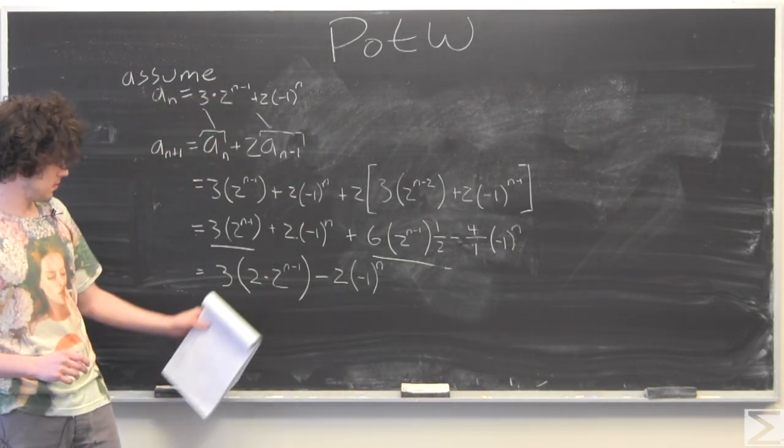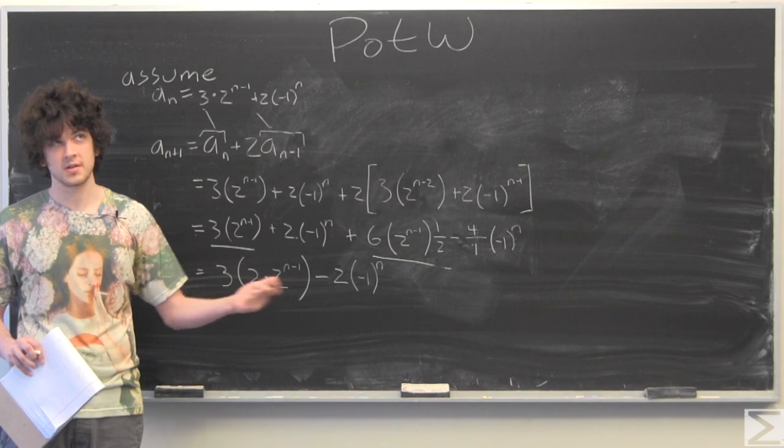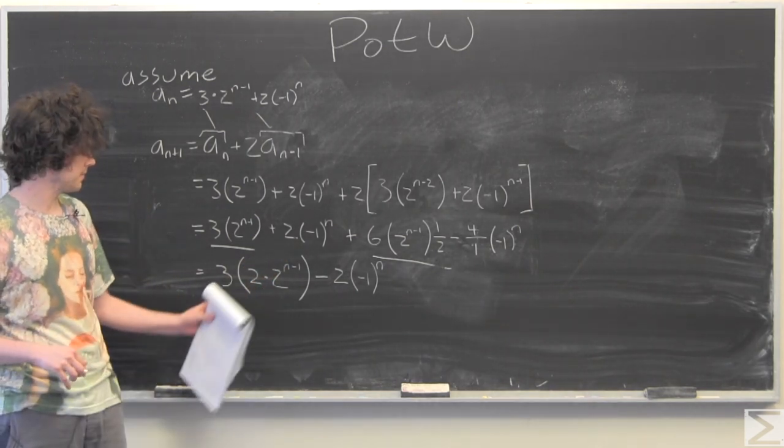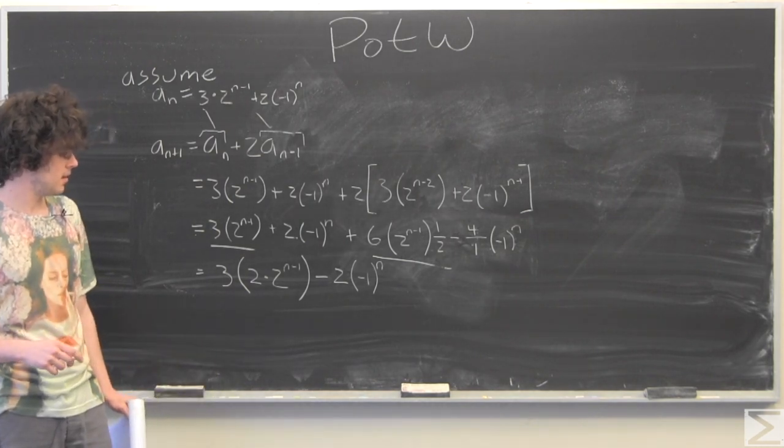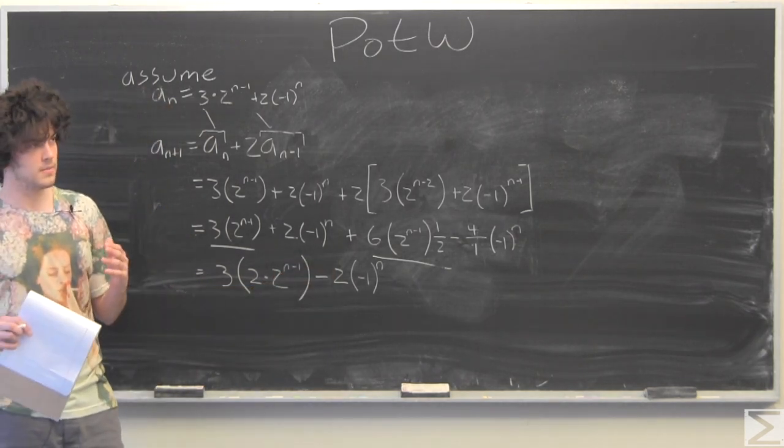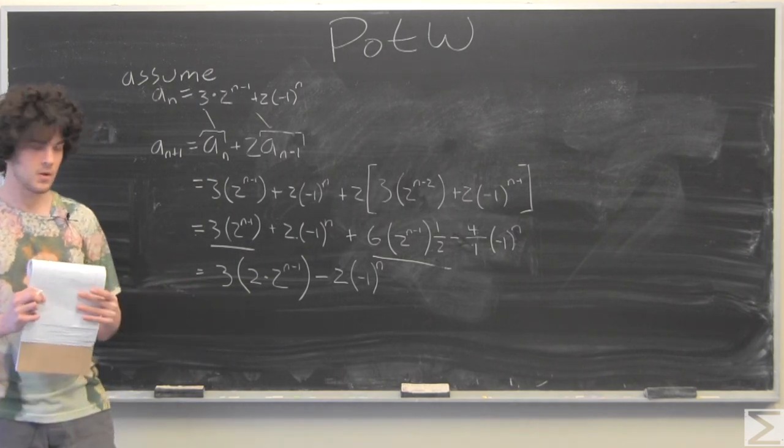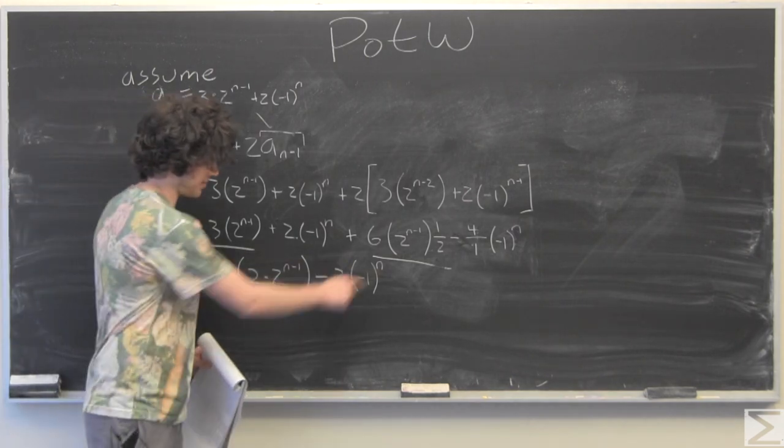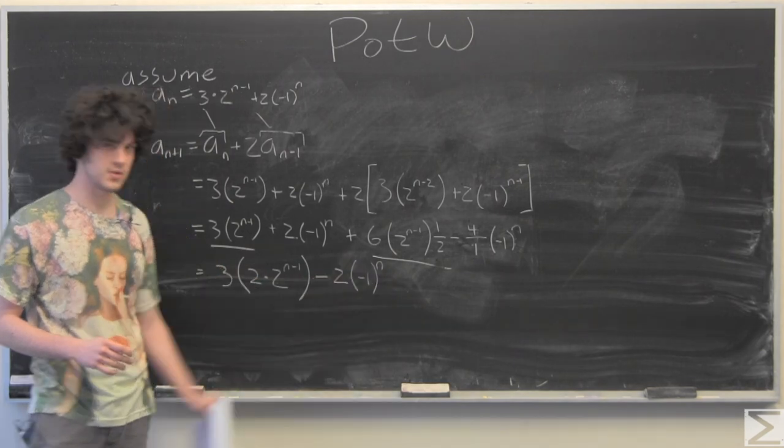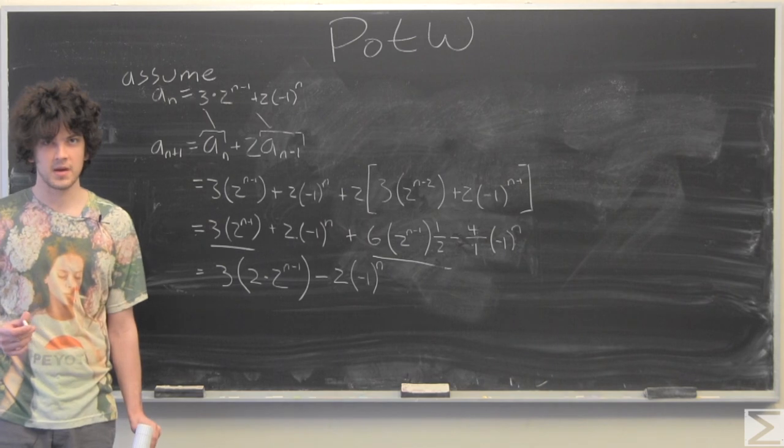And so what this is, since we have 2 times itself n minus 1 times, and then we're multiplying that by 2 again, that just turns into 2 to the n. And since every other term flips sign from its previous term, if we make this n plus 1, we're going to be adding 2 times negative 1 to the n plus 1. So rewriting that will give us what we expect from our induction.